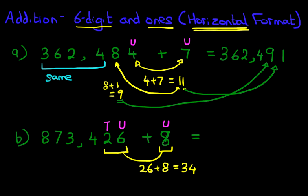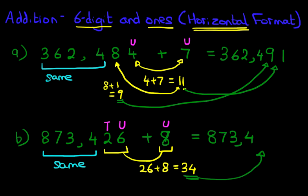And because we are not carrying anything, the rest of the number, and let's highlight this again, remains the same. That does not change. So therefore, our answer is 873,434. And that is how we add a six-digit number with ones using the horizontal format.